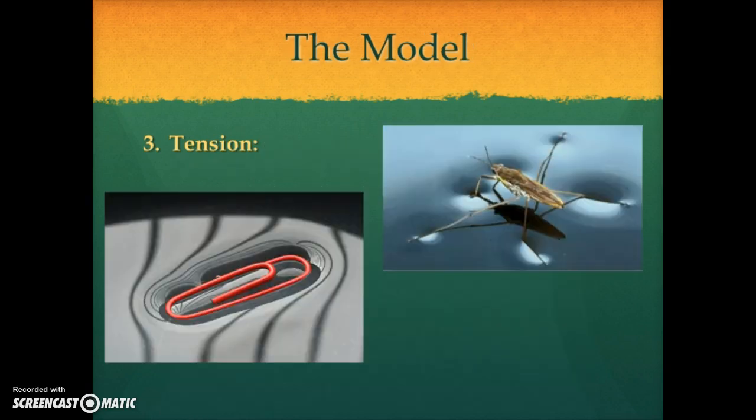This is why water bugs and paper clips don't fall through into the water. The bonds between the water molecules on the surface here are being stretched, but they aren't being stretched too much so that they break, and that's why the bug and the paper clip float dry.